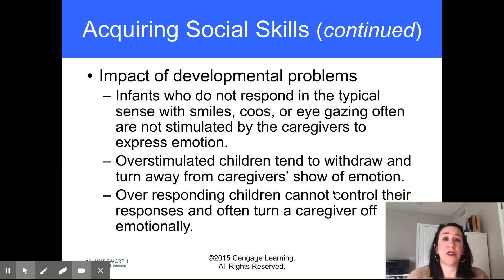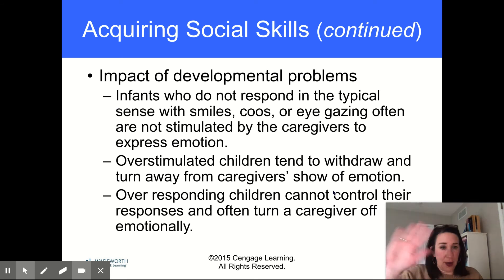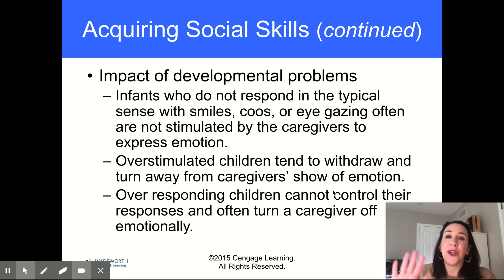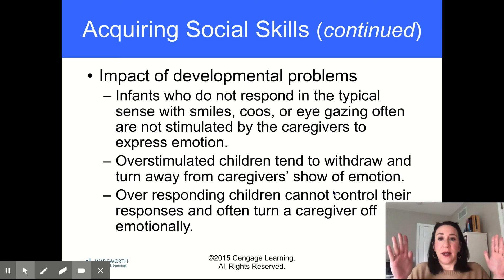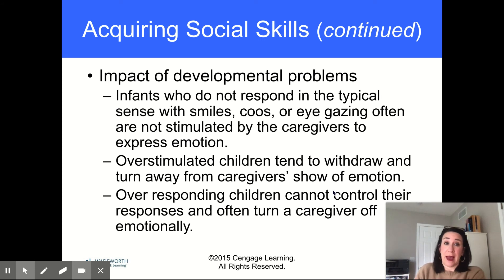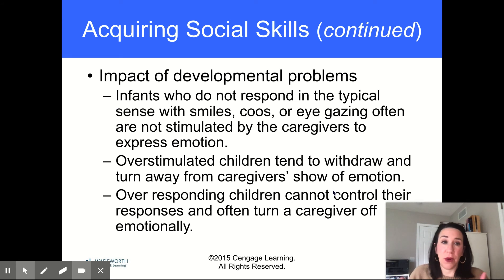Over-stimulated children tend to withdraw and turn away from a caregiver's show of emotion — don't play it too hard. You need to figure out how to work with each individual child because what works with child A is not always going to work with child B. Over-responding children can't stop it, and sometimes those kids can seem like a little too much. But your job is to figure out how you can work through this together with them.